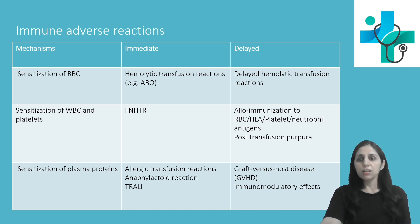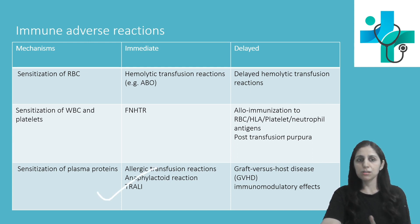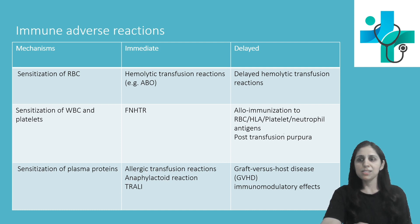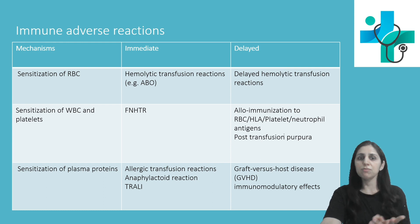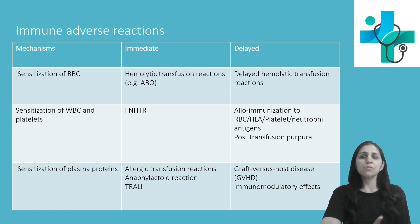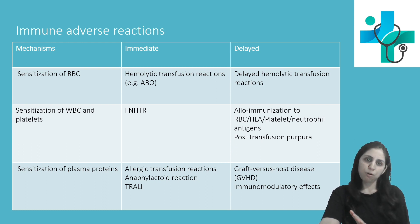The third is allergic transfusion reaction, which occurs due to sensitization to plasma proteins — for example, either anaphylactic shock or urticaria — which mainly occurs due to IgA antibody formation.